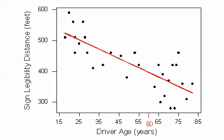It would be useful if we could find a line, such as the one presented on the scatterplot, that represents the general pattern of the data. If we had such a line, we would simply use it to find the distance that corresponds to an age of 60, like this, and predict that 60-year-old drivers could see the sign from just under 400 feet.